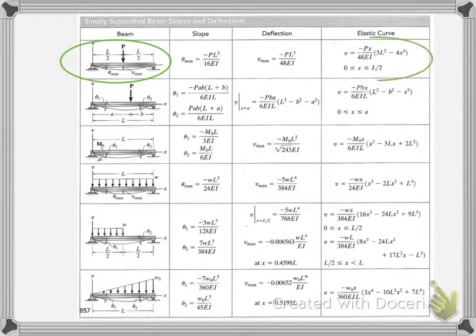If we jump now to our beam table for simply supported beams, we see that we have both the case on here with the point load in the middle, and we have the case with the uniform load. In this case, we don't want to find the max deflection. We can see the max deflection does occur in the middle, but we don't care about the max. We want to find it at X equal to five. So we need to go to that last column and get the equation of the elastic curve and use that for this problem.